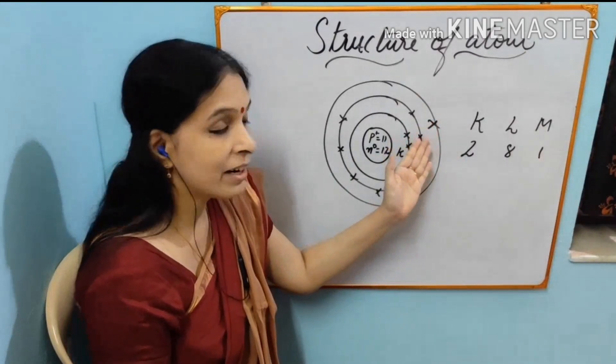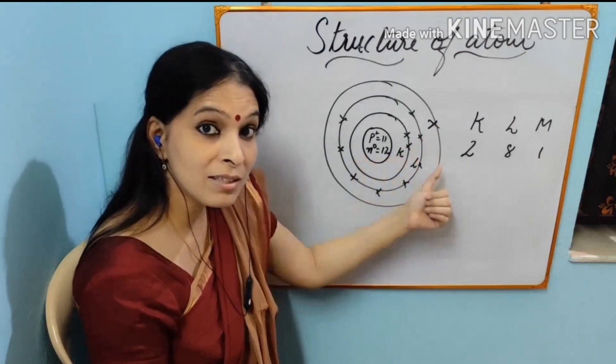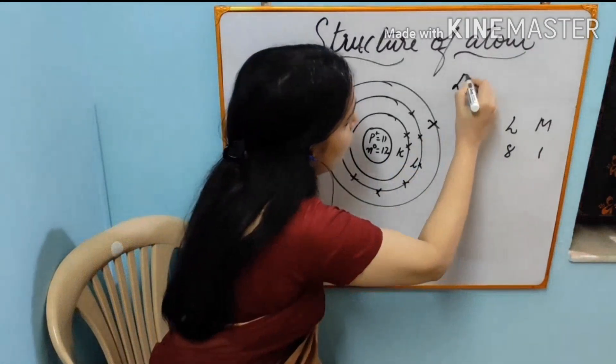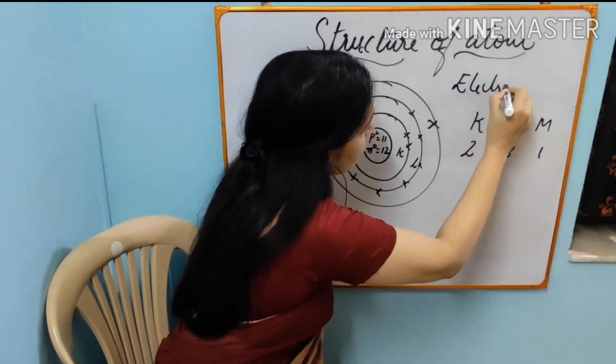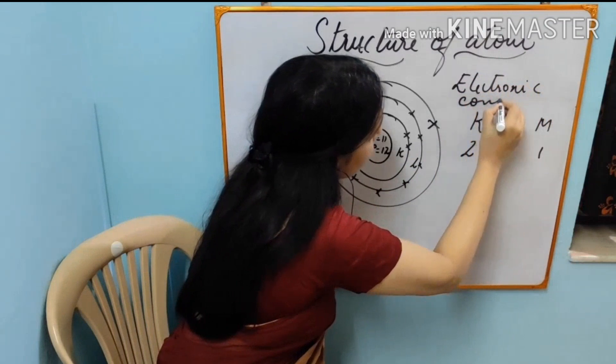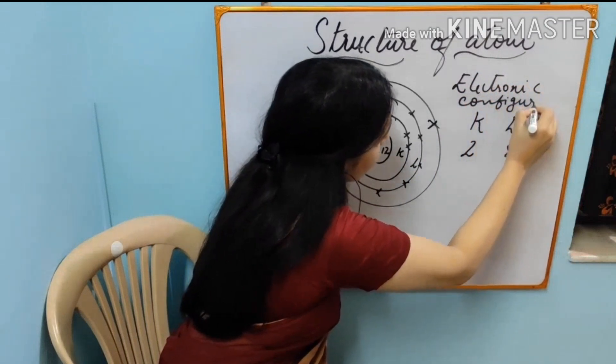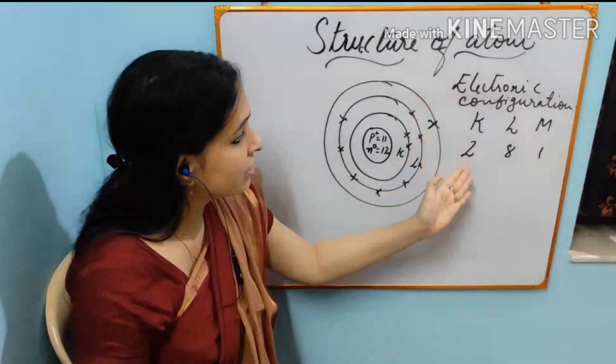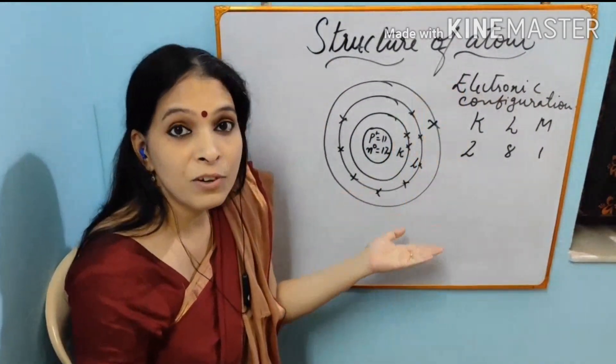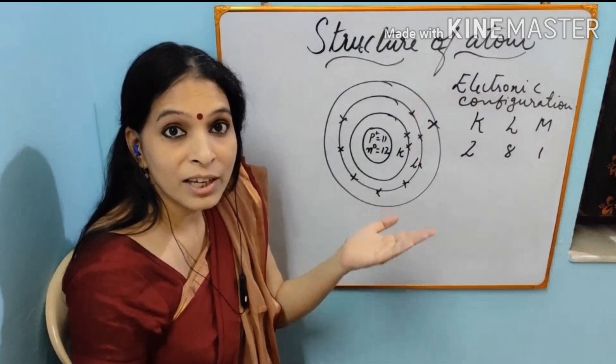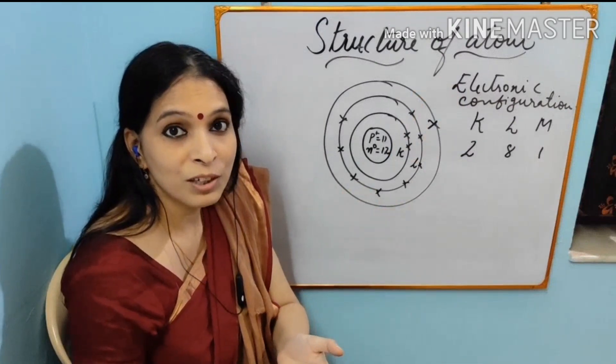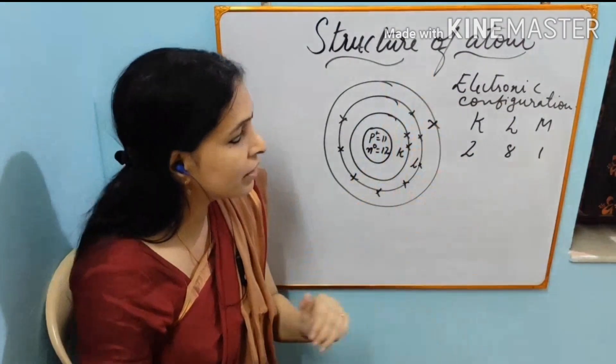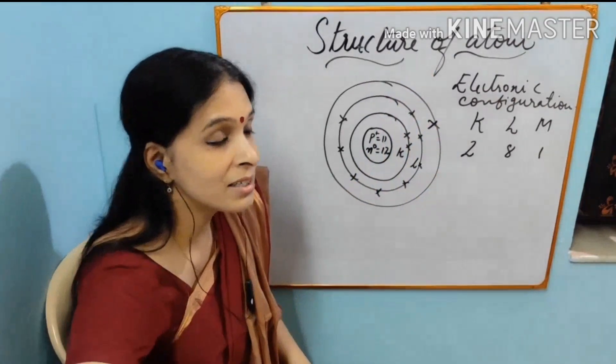And the way of arrangement of electrons inside an atom is known as electronic configuration. So this is the electronic configuration of sodium. With other elements you can try how you will write the electronic configuration. These are the fundamentals for writing the formulae. With the next two classes I will come to the fundamentals of writing the formulae. Before that you should know how to write the electronic configuration.